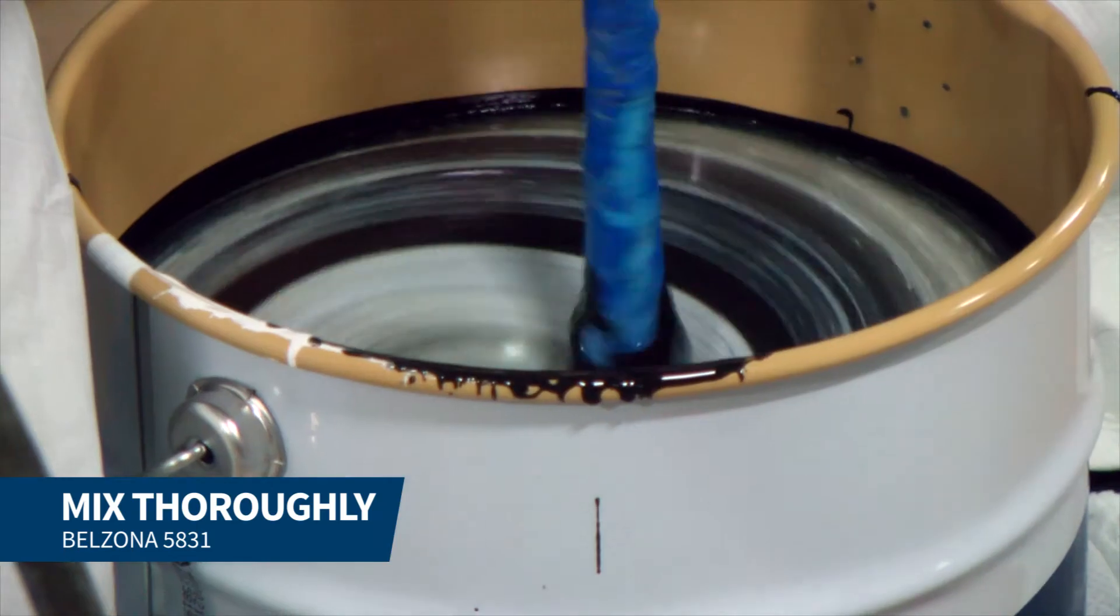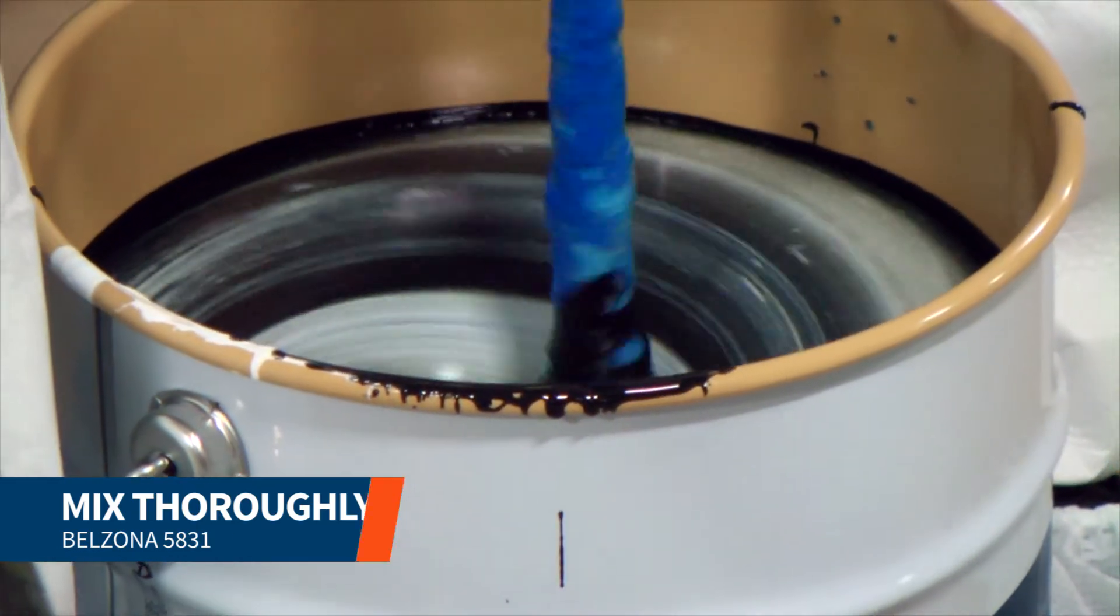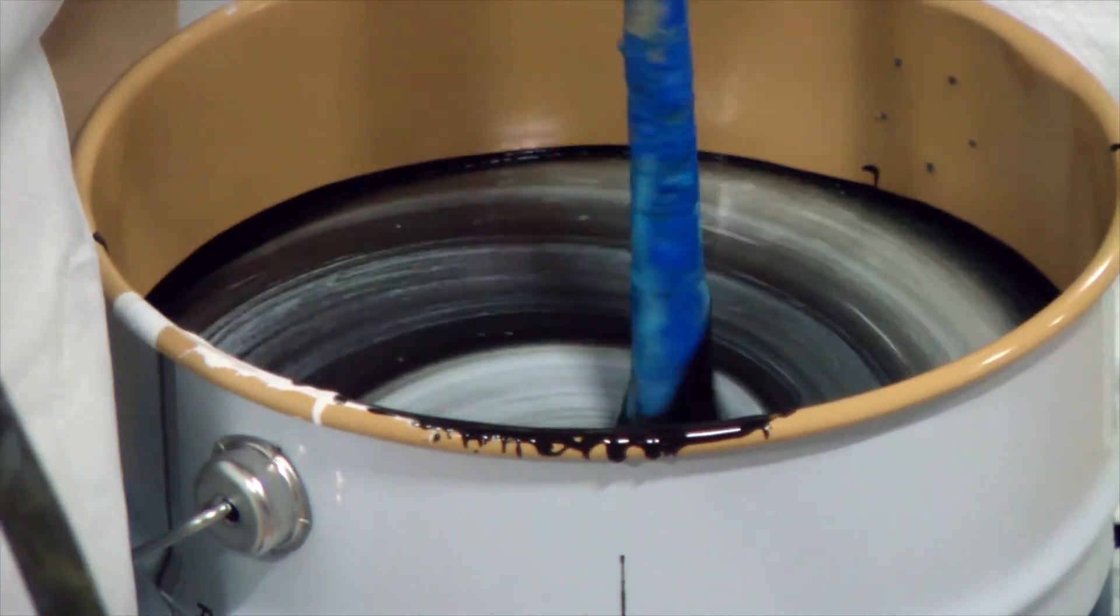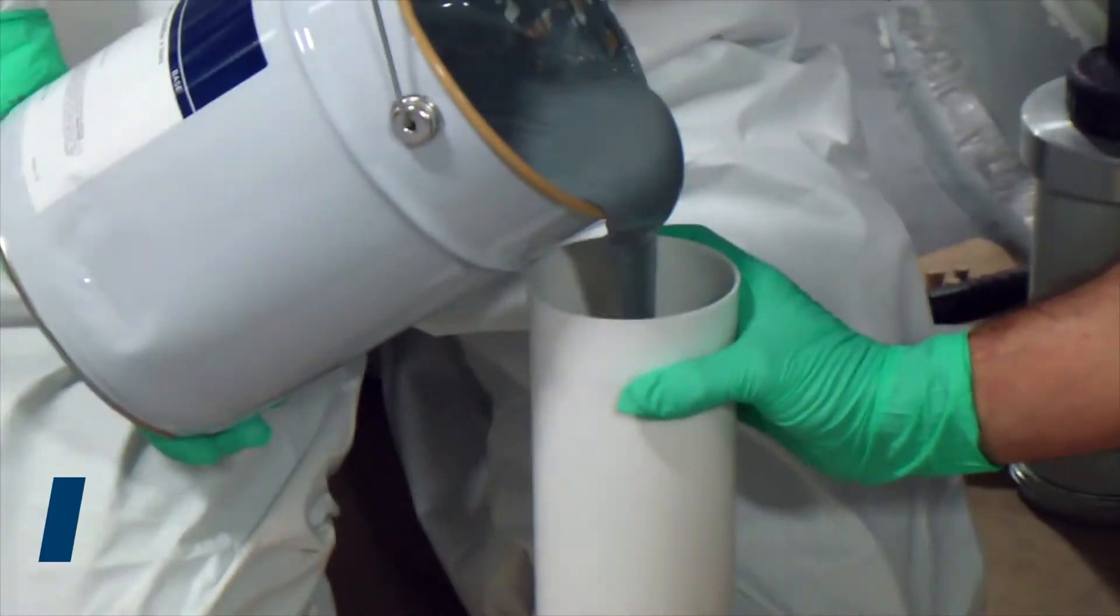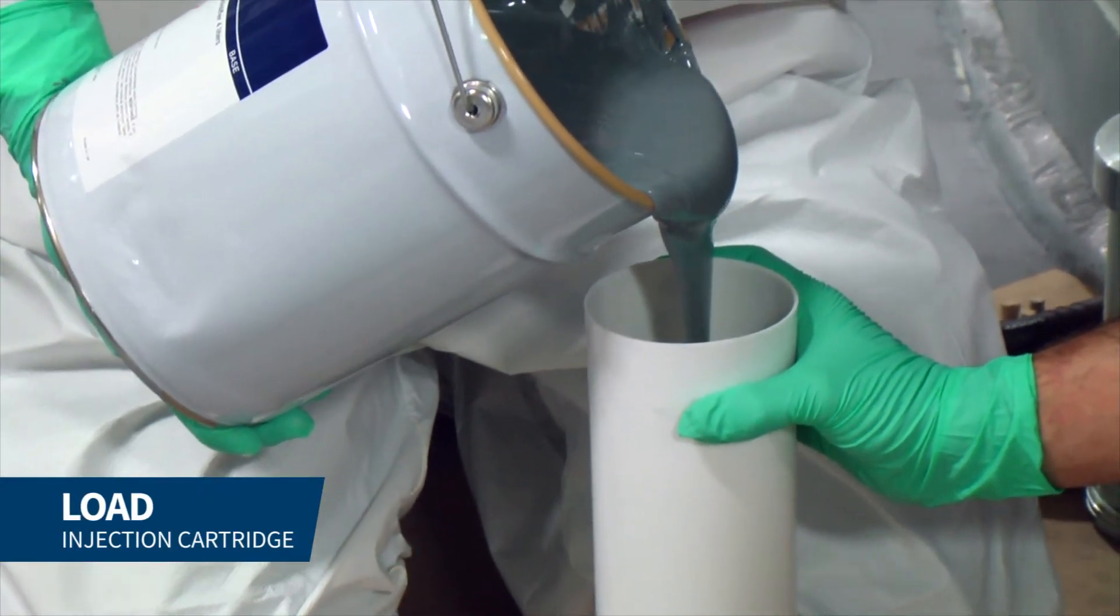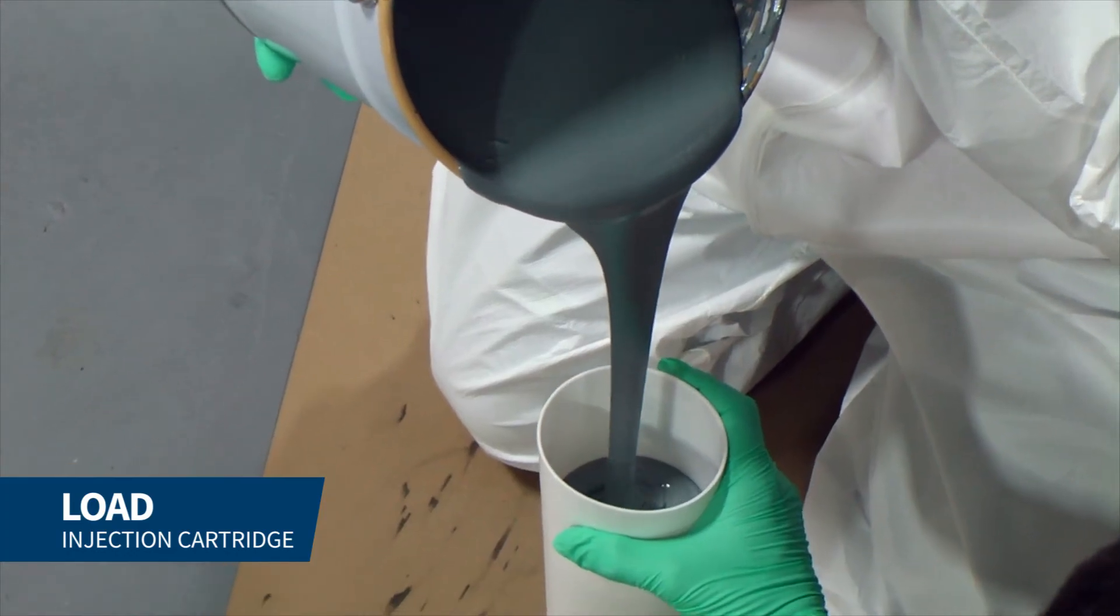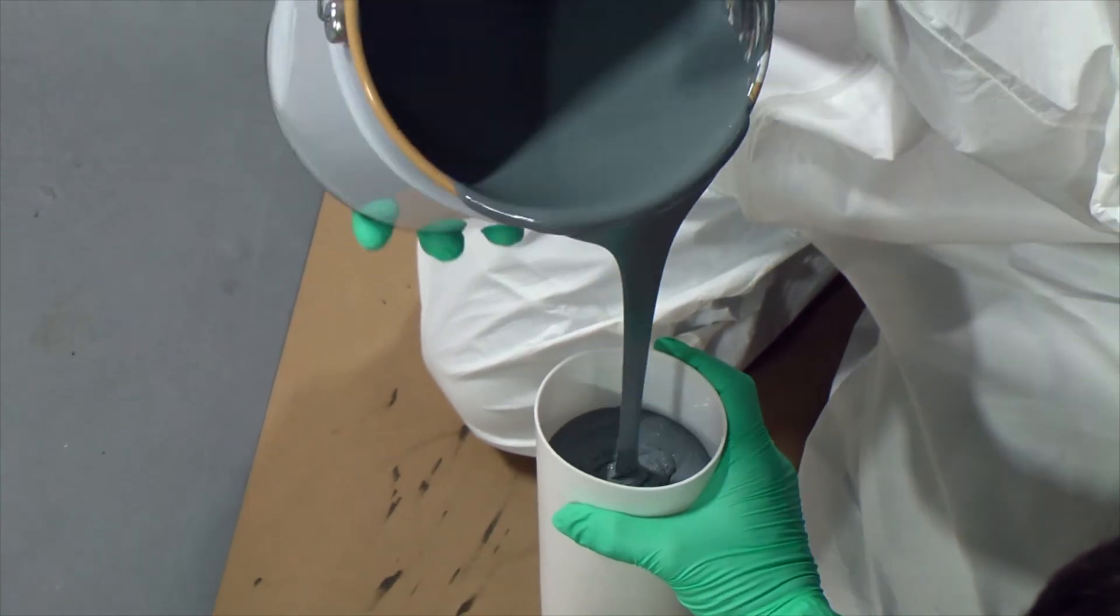We mixed Belzona 5831 until a uniform material was achieved. Next, we loaded the injection cartridge with Belzona 5831 and assembled the pneumatic injection gun.